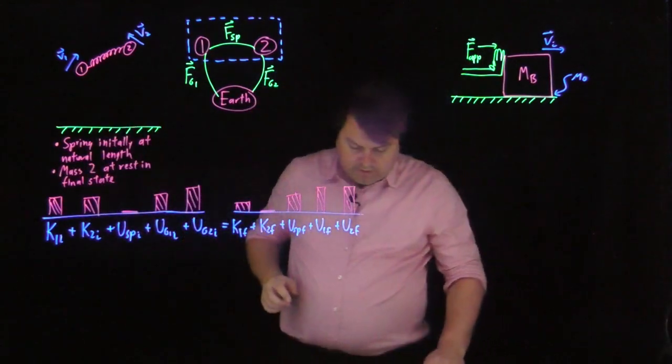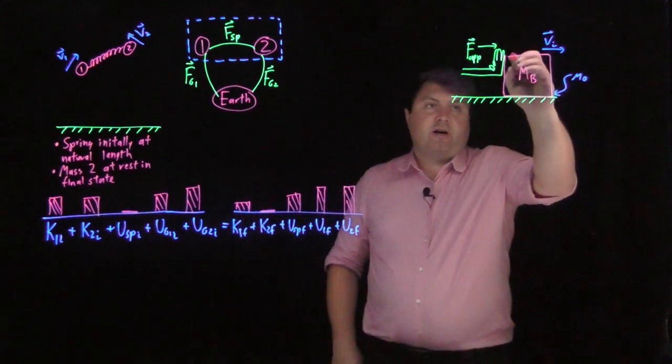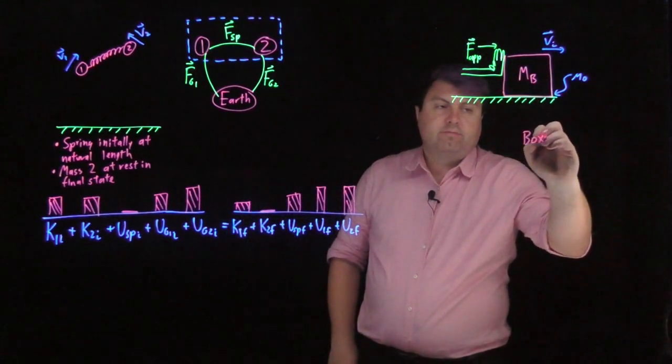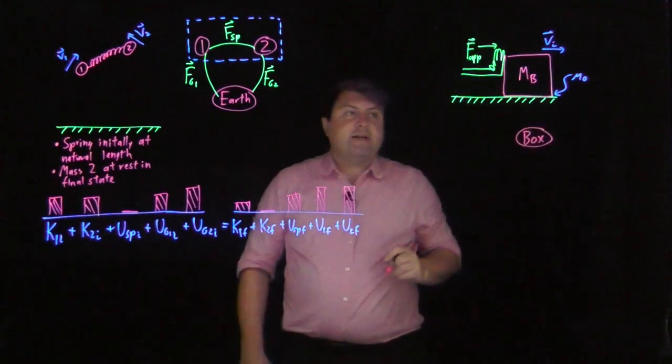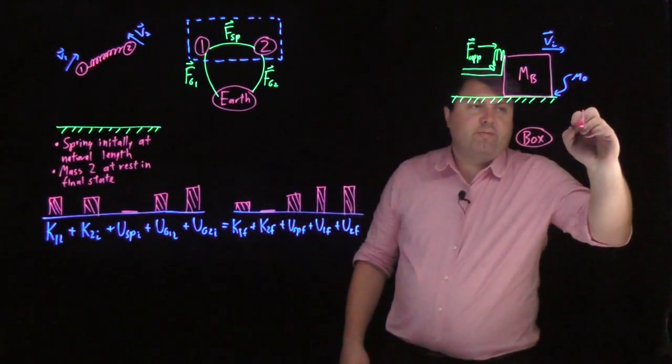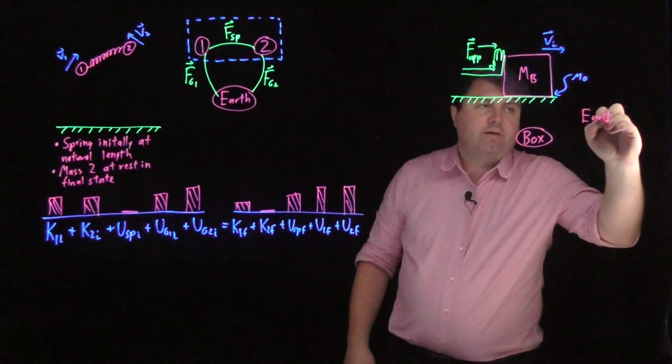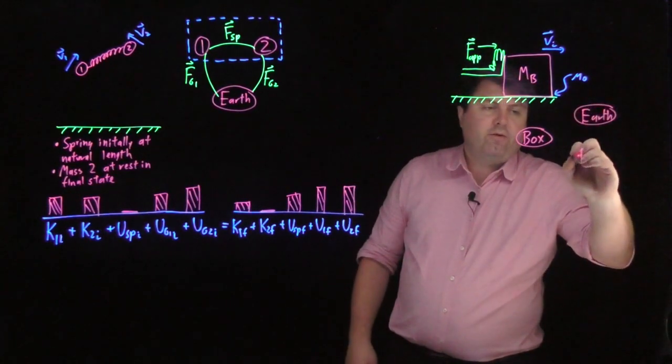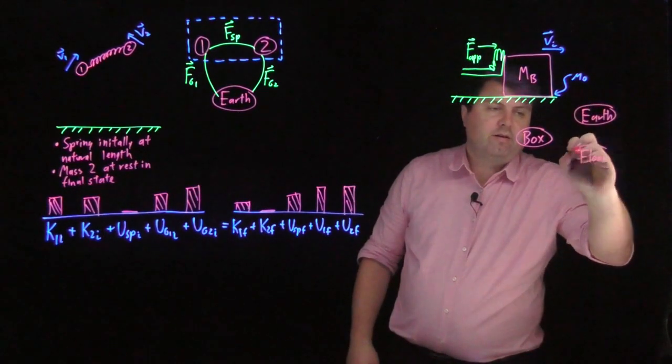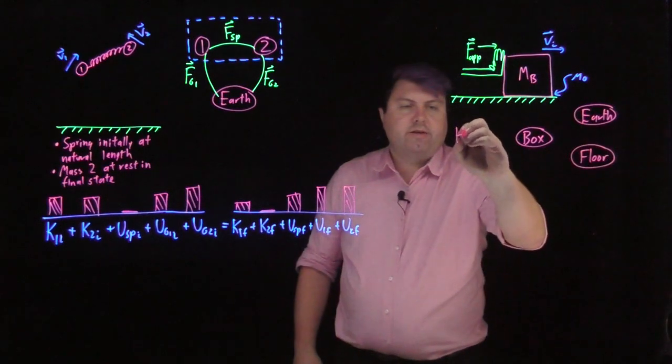For this one, now we have just our box. And what's interacting with the box? Well, the gravity from Earth is interacting with it. The floor is interacting with it. And the hand is interacting with it.